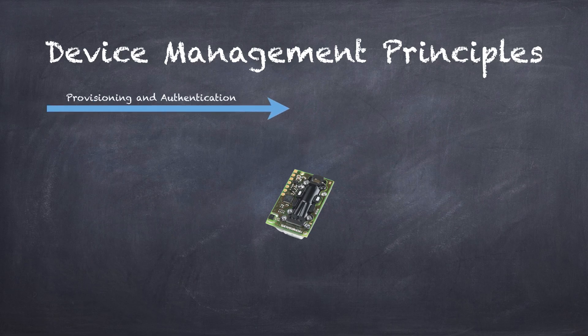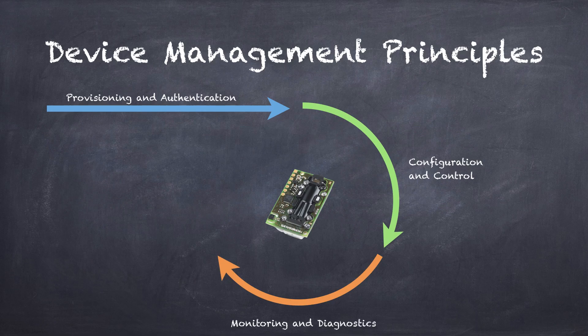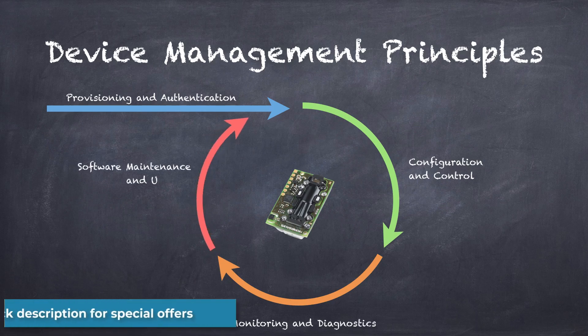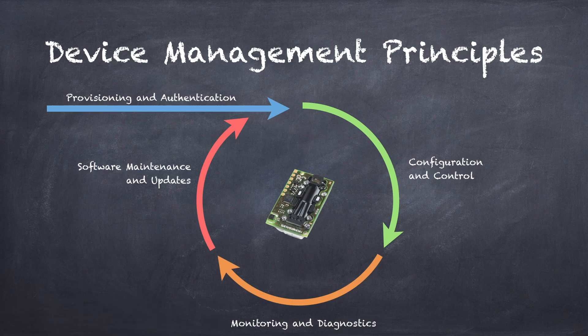The four principles are: provisioning and authentication, configuration and control, monitoring and diagnostics, and software maintenance and updates. The last three principles are cyclical and will repeat until the end of life for the device. As mentioned many times throughout this course, these concepts are not new nor unique to IoT — it is just that IoT introduces complexity to achieve these very necessary aspects of systems and system security.